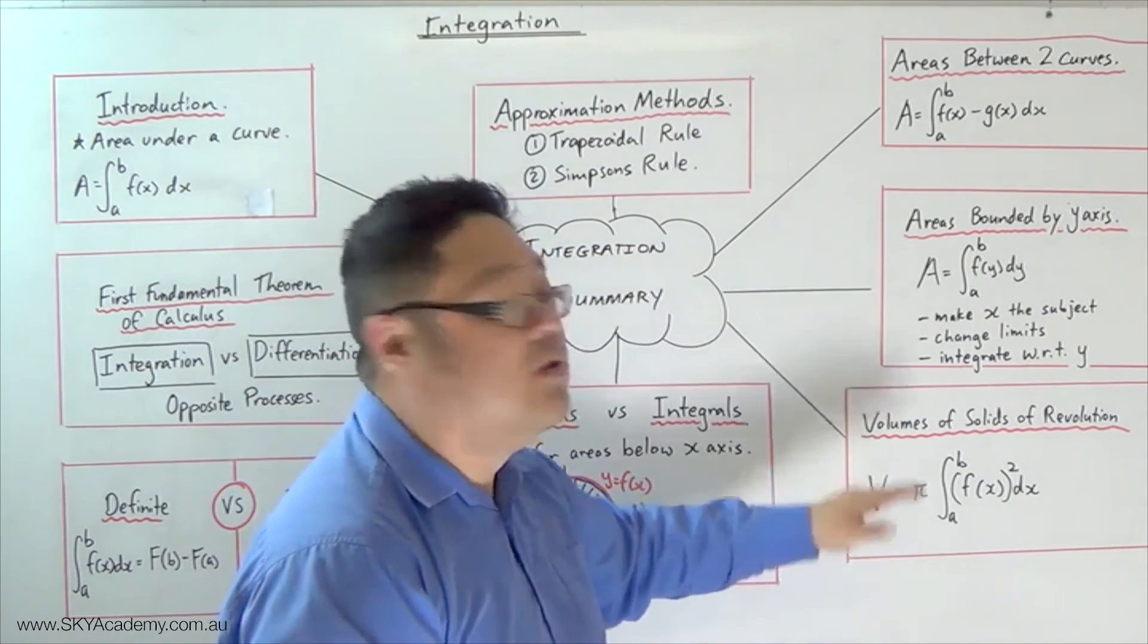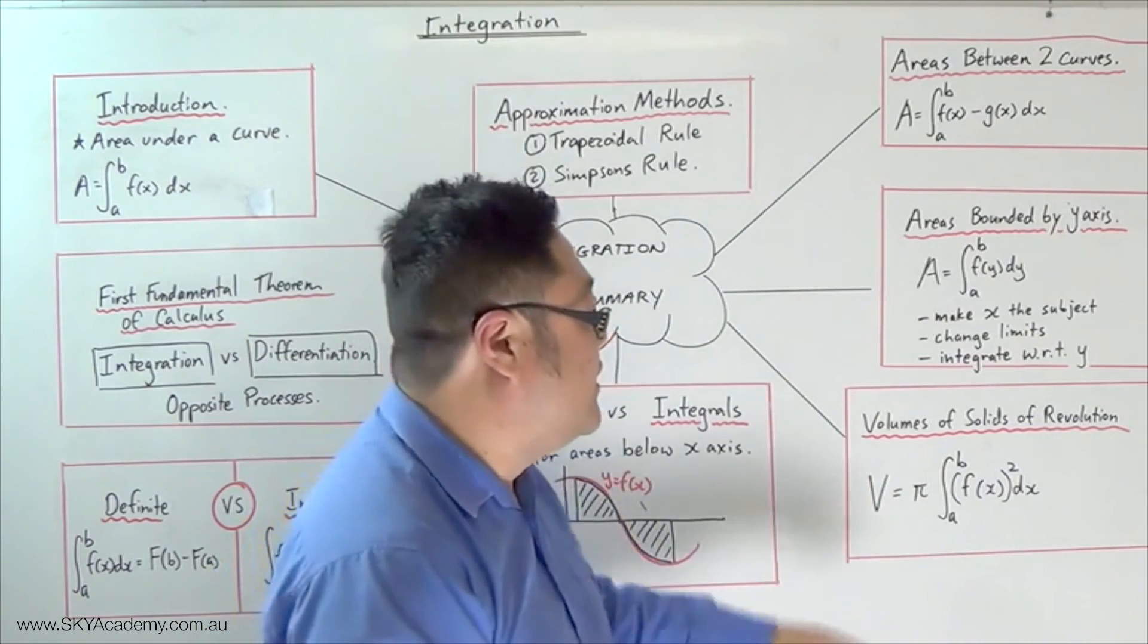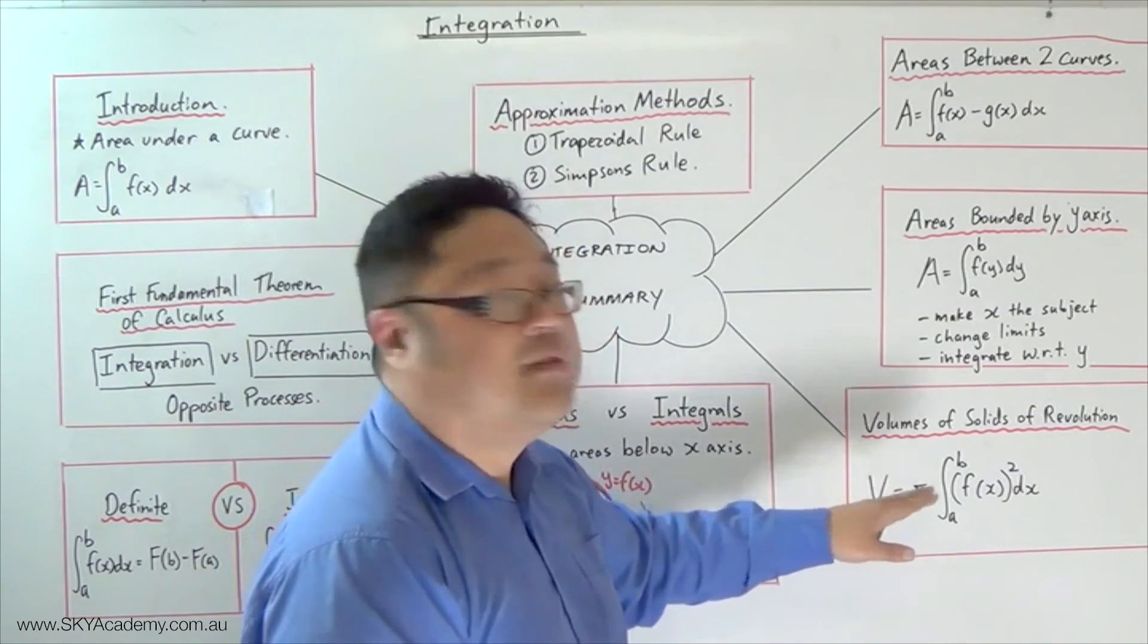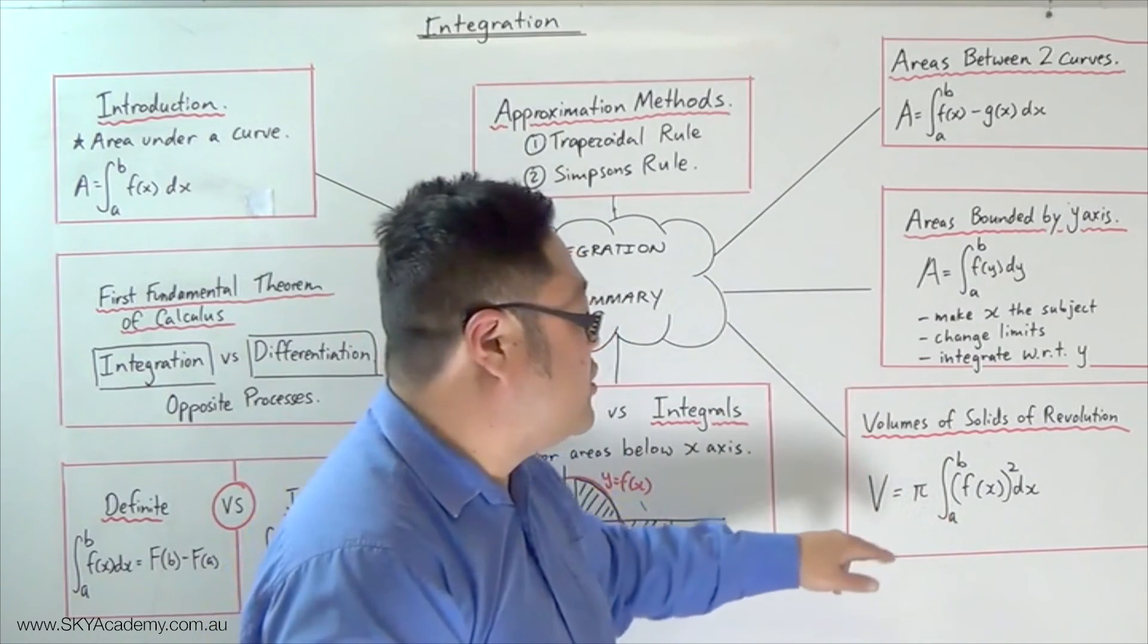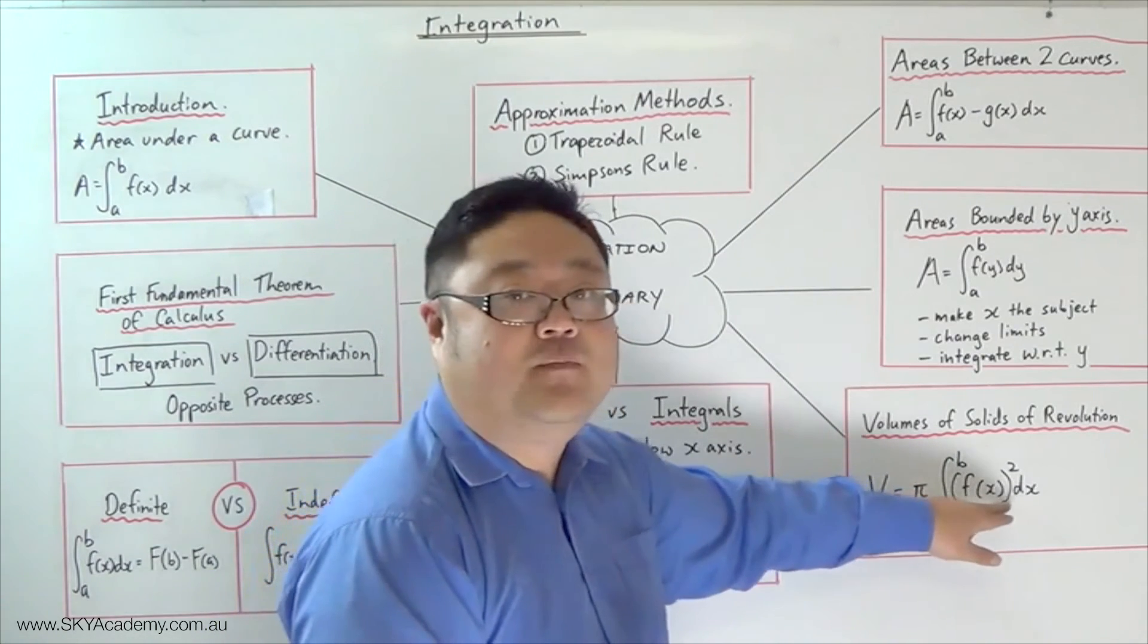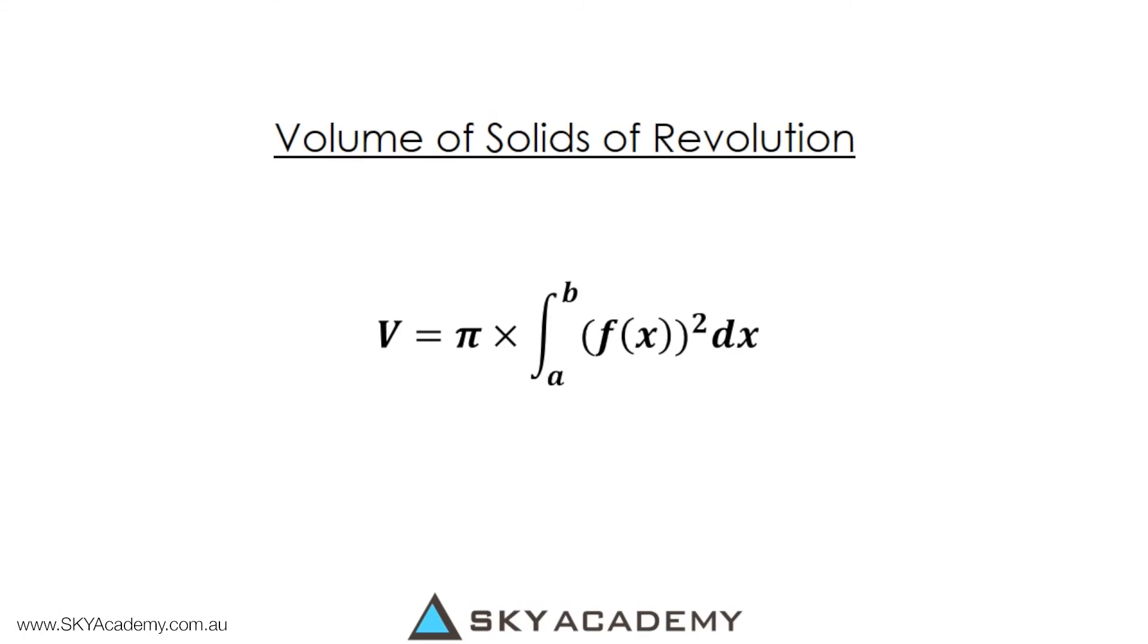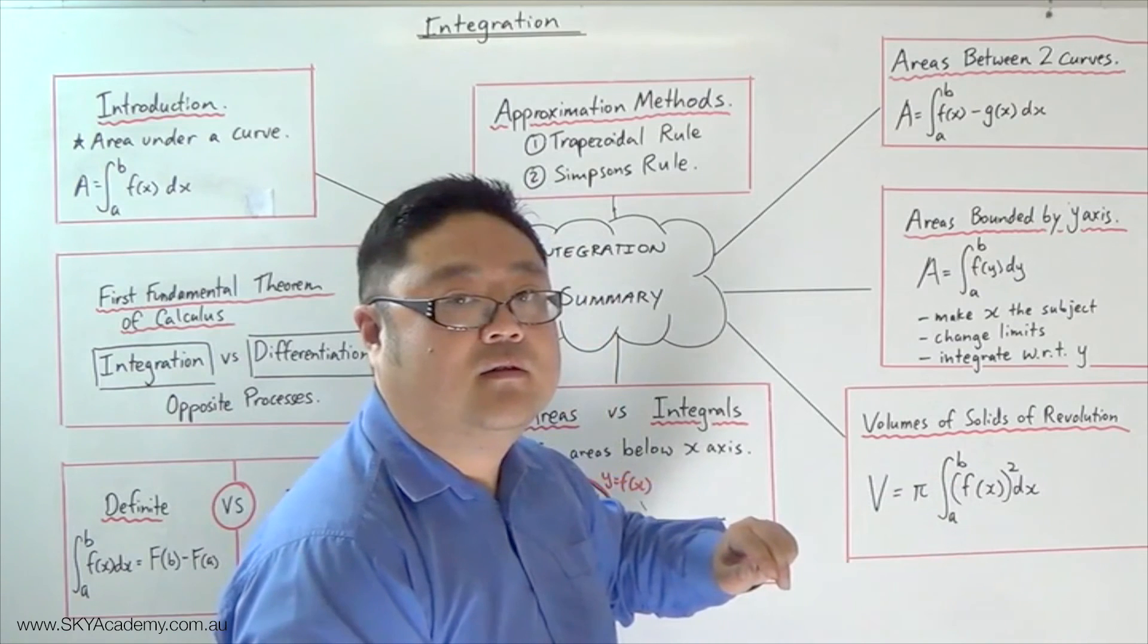Finally, what we did was we looked at volumes of solids of revolution. We worked out that to find the volume of a solid of revolution, you actually square the function, integrate, and then multiply by pi.